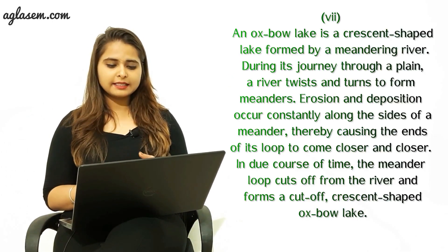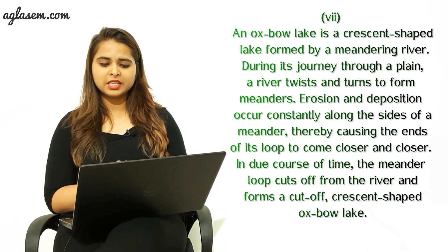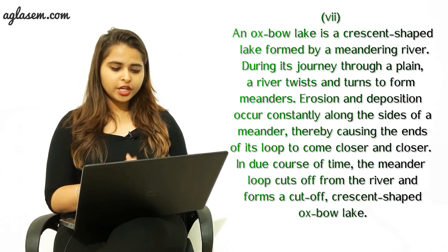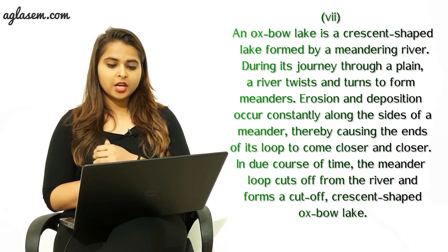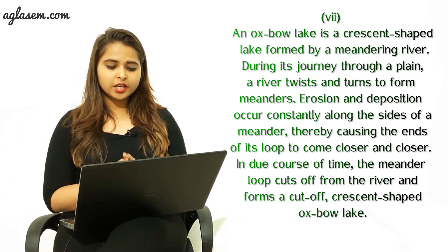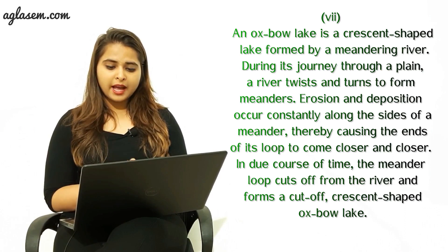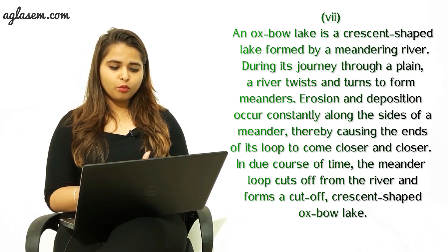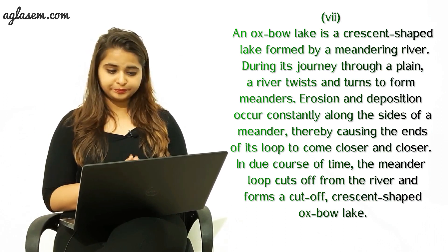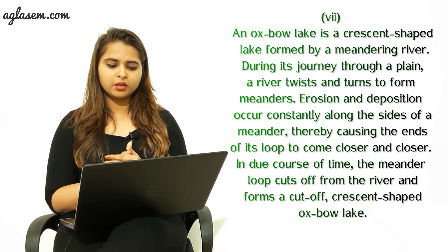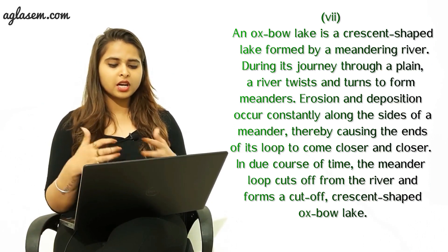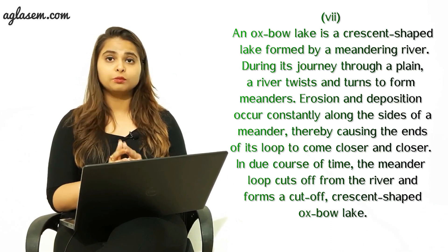The last question: what are oxbow lakes? The answer is: an oxbow lake is a crescent-shaped lake formed by a meandering river during its journey through a plain. A river twists and turns to form meanders. Erosion and deposition occur constantly along the sides of the meander, causing the ends of its loop to come closer and closer. In due course of time, the meander loop cuts off from the river and forms a cutoff crescent-shaped oxbow lake.